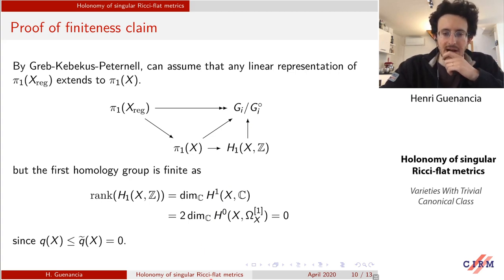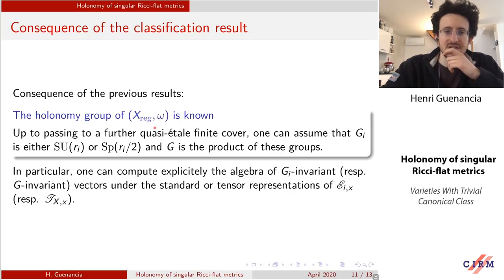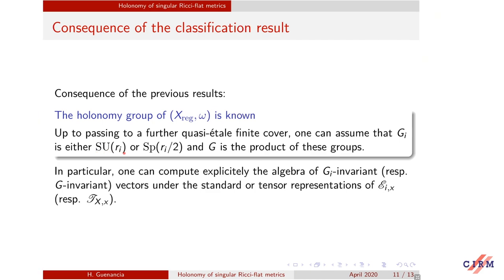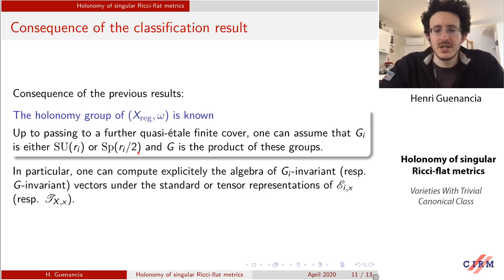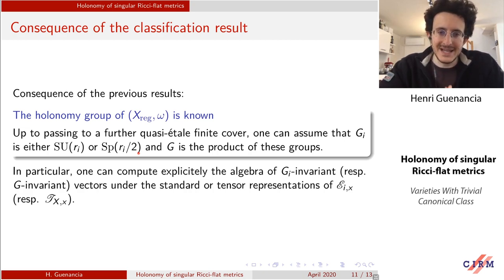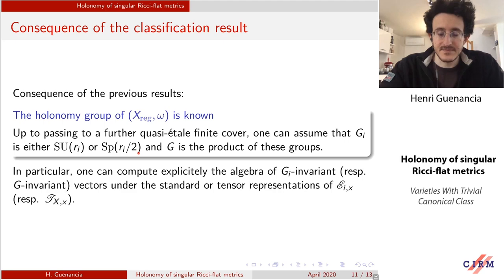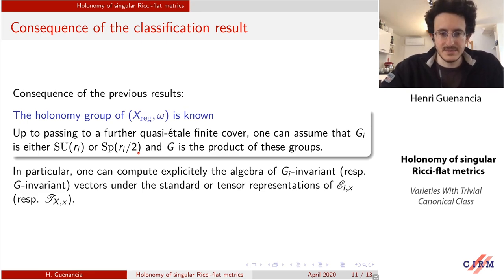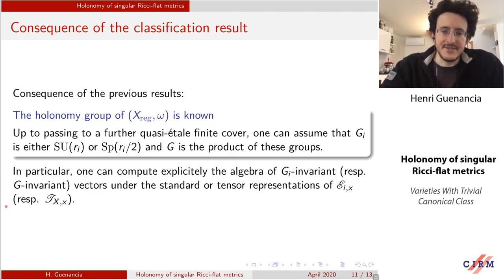Up to passing to a further quasi-étale cover, G_i is either SU(r_i) or Sp(r_i/2). So I know all the holonomy groups of the E_i's, and in particular I know the holonomy group of TX, which is the product of those holonomy groups. This completes the understanding of the differential geometry of TX from the holonomy perspective. If I know the holonomy group, I certainly know the algebra of invariants of that group.